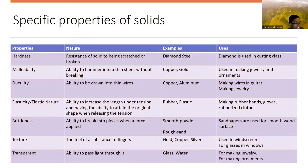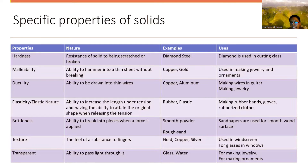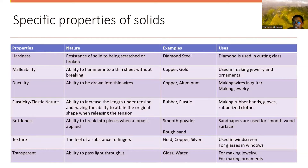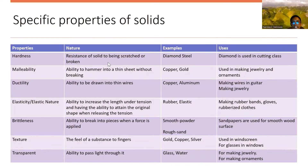The next property is transparent. The nature of transparent is the ability to pass light through it. Examples are glass and water. Uses include making jewelry and window panes.